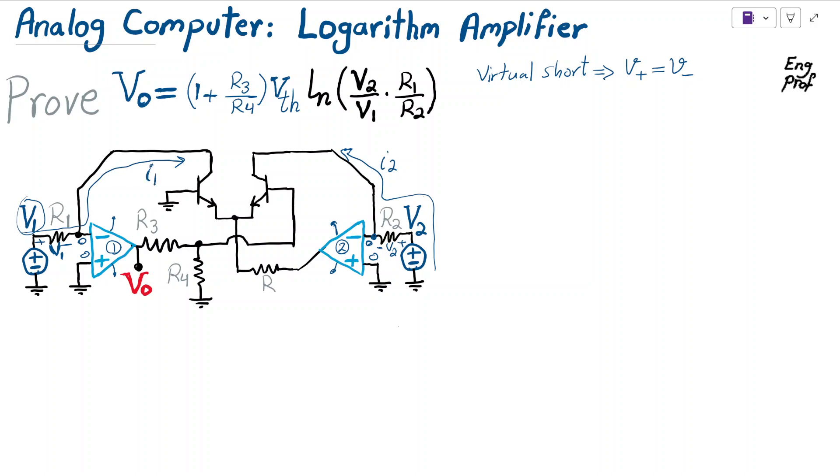As a result, i2 is simply V2 over R2, and i1 equals V1 across R1 divided by R1. That's how we find these currents. Now each of these currents are flowing as the collector current for these bipolar transistors or BJTs.